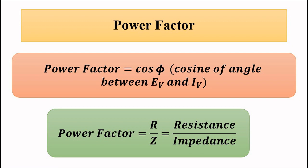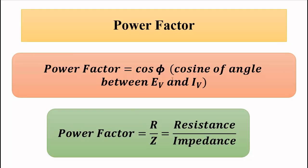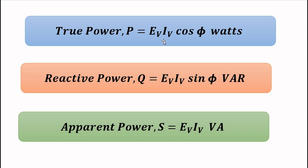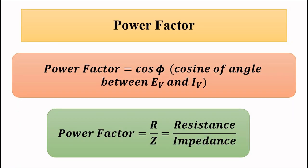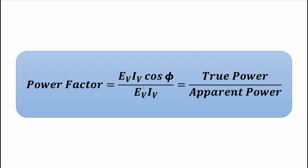Power factor is the cosine of the angle between EV and IV. It can be represented in three ways: as R/Z from the impedance triangle; as VR/EV from the voltage triangle; or as true power P divided by apparent power EV·IV, i.e., cos φ = P / (EV·IV), which equals P divided by apparent power S.